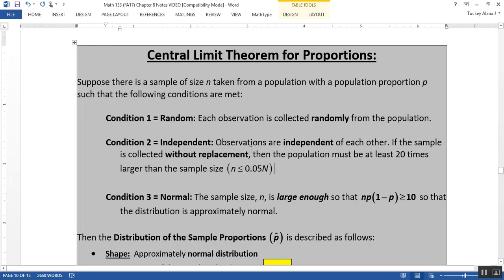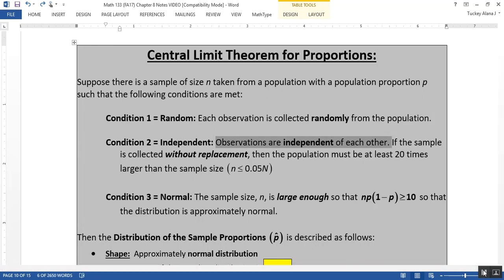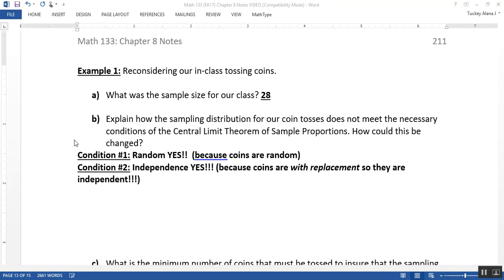But we're not without replacement. We're with replacement, because every time you pick up a coin, it has replacement. So we have observations are independent of each other because they're coins, and coins are always independent. Alright, so condition one and two are yes, but condition number three, I think we're going to have problems. So let's see if I'm correct.